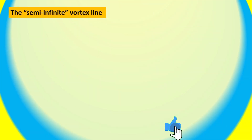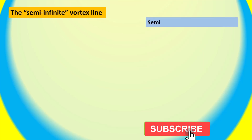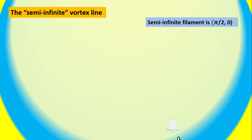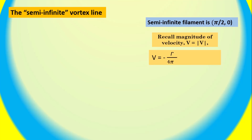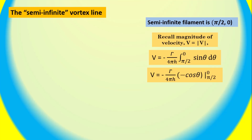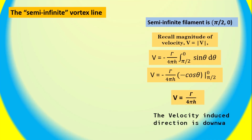This result is precisely that for a point vortex in two-dimensional flow. For a half or semi-infinite filament, integrated from π/2 to 0, the magnitude of the velocity is given by V equals gamma divided by 4π times h, times the integral from π/2 to 0 of sin(θ) dθ. The velocity induced in the downward direction for a semi-infinite straight vortex filament at a perpendicular distance h from P is simply gamma divided by 4π times h.